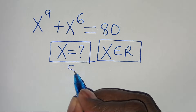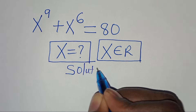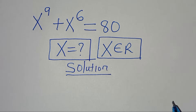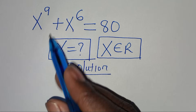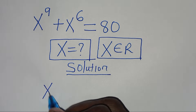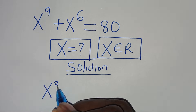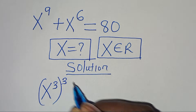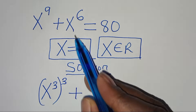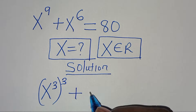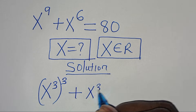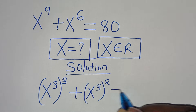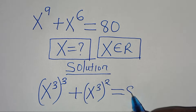So let's provide a solution. We have x to the power of 9, which we can express as x to the power of 3, cubed, then plus x to the power of 6, which can be expressed as x to the power of 3, squared. This is equal to 80.